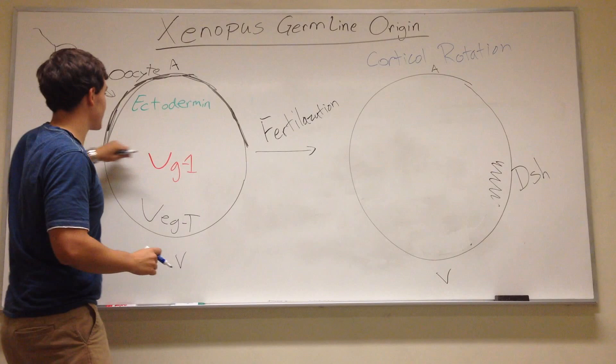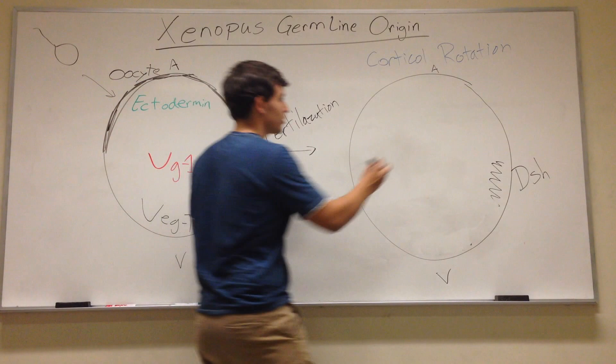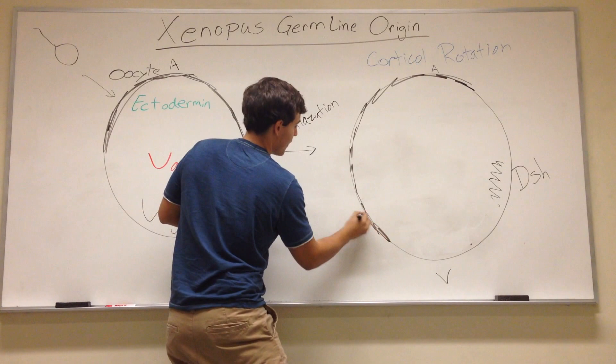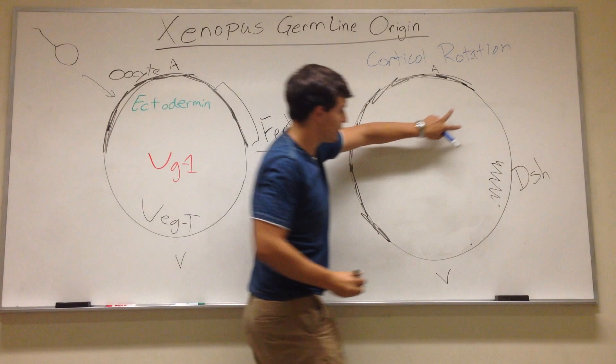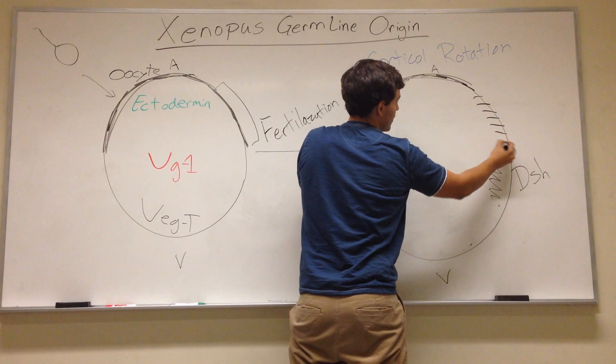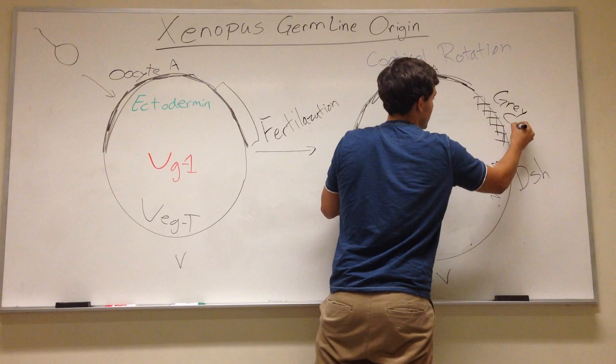And so our normal axes that we have here of the dark up top and the white down below gets shifted a little bit. And so we can see we have a little bit of a rotation. And what's left here then is that this area that used to be black now is going to have white pushed into it. So it's going to be somewhat gray, which I will denote like this and call that the gray crescent.